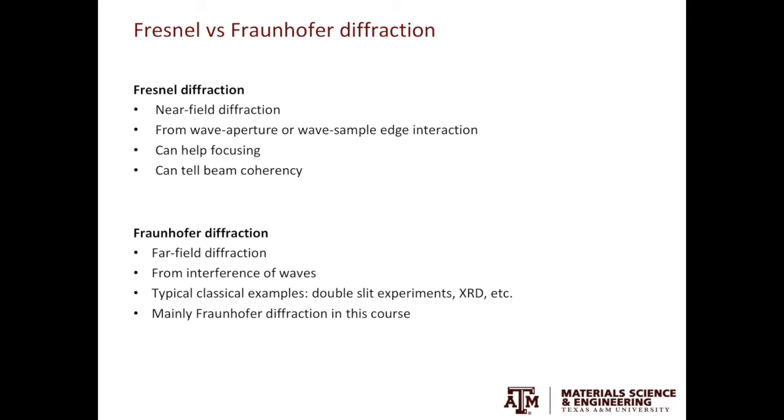The second type of diffraction is called the Fraunhofer diffraction. It is also called far field diffraction and is caused by the interference of waves. The typical examples are the double slit experiments you have seen in the previous slide, XRD, as well as electron diffraction, which we will discuss in details in the second part of this course.